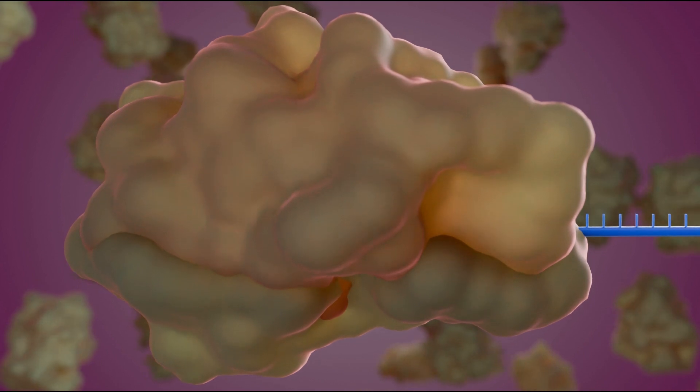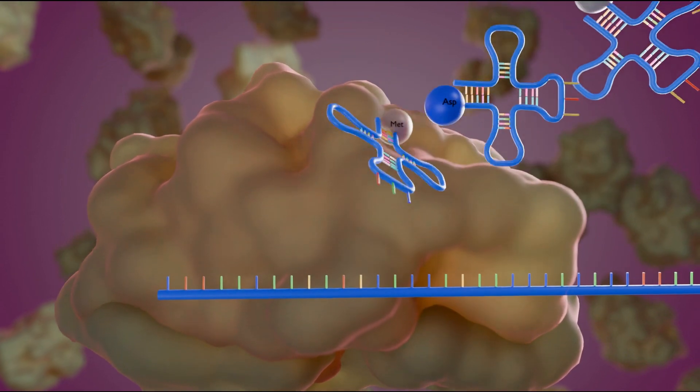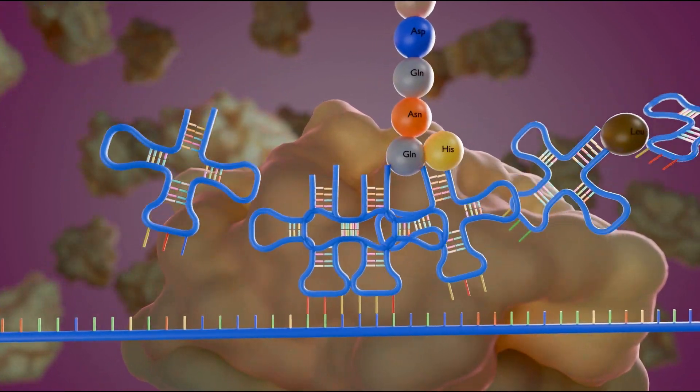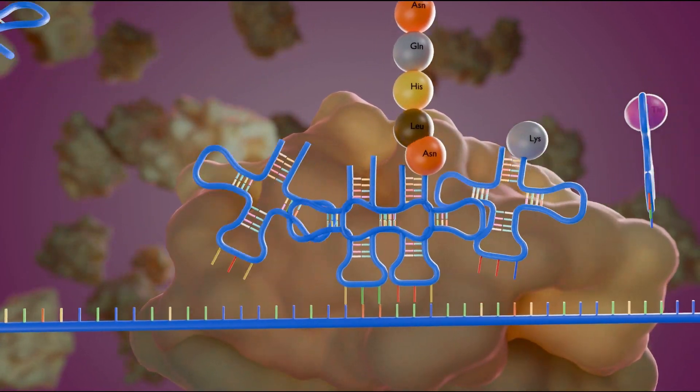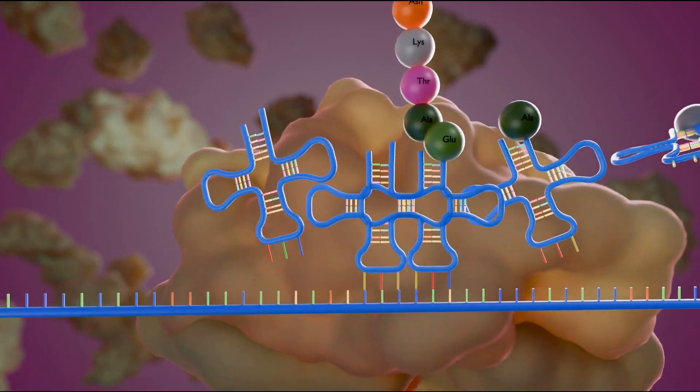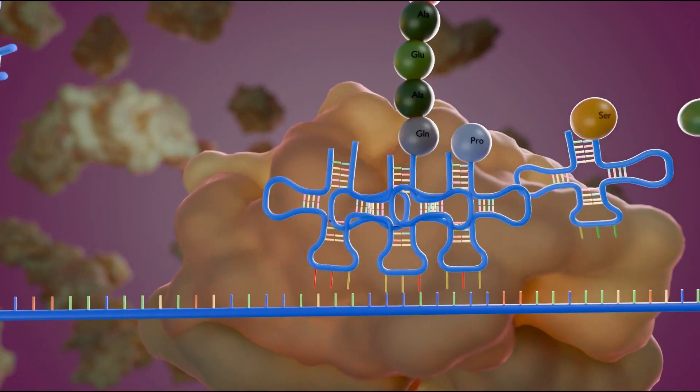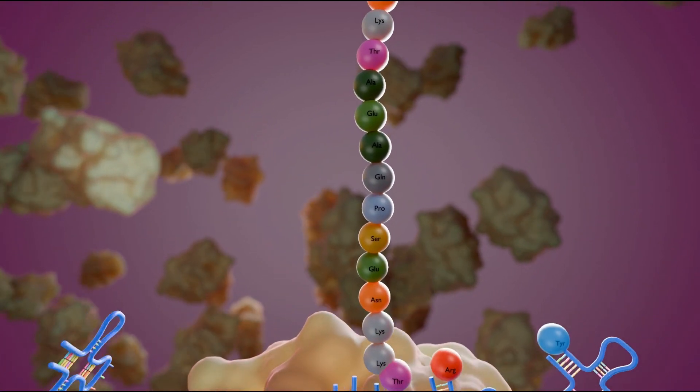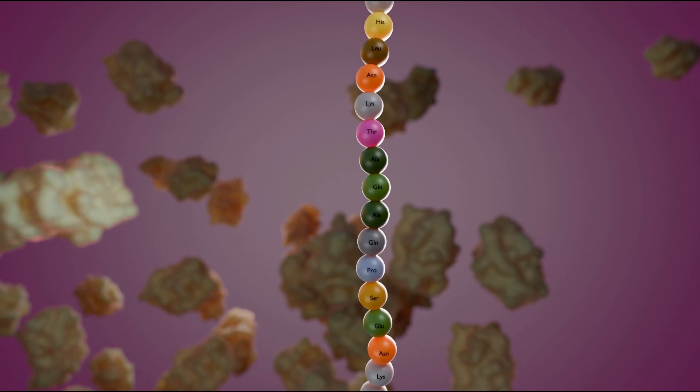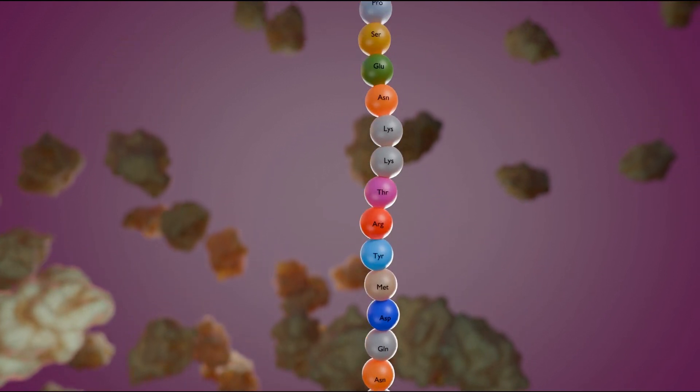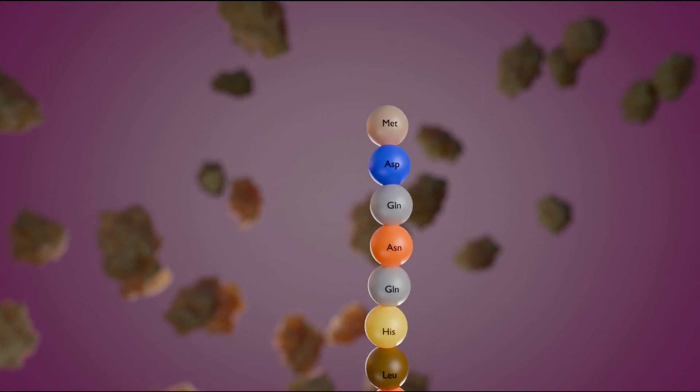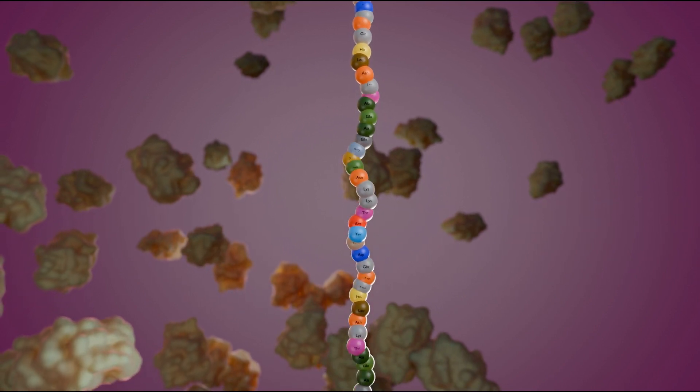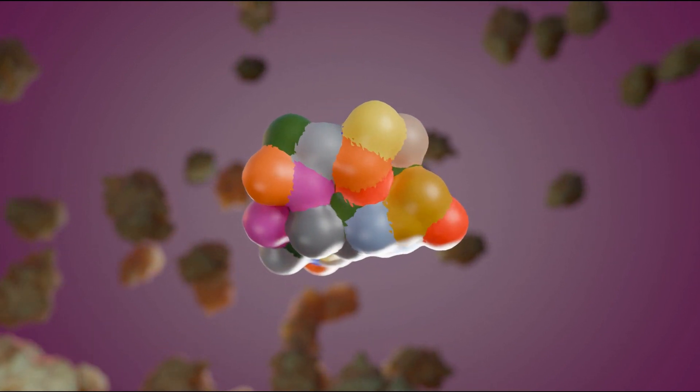Transfer RNA molecules carry the amino acids to the ribosome. The messenger RNA is read three bases at a time. As each triplet is read, a transfer RNA delivers the corresponding amino acid. This is added to a growing chain of amino acids. Once the last amino acid has been added, the chain folds into a complex 3D shape to form the protein.